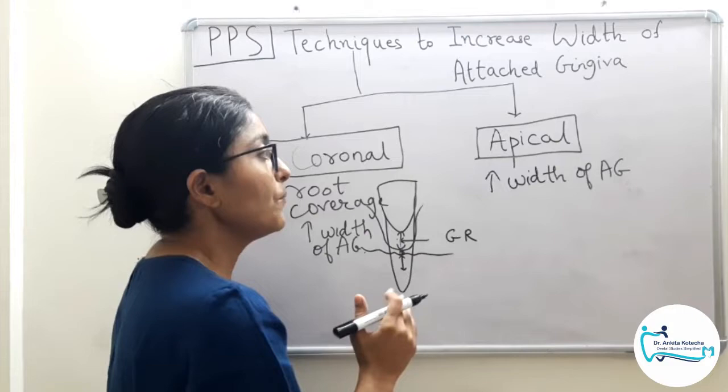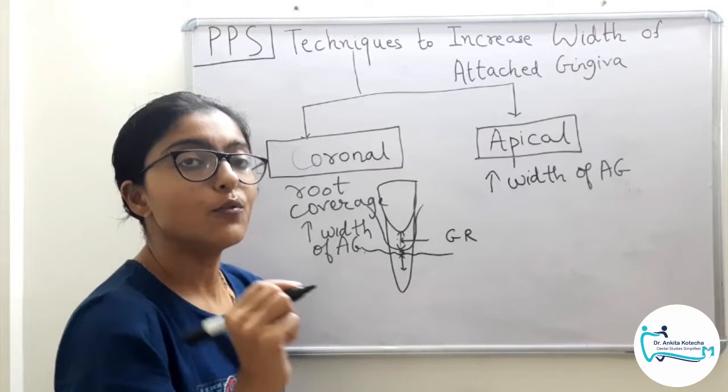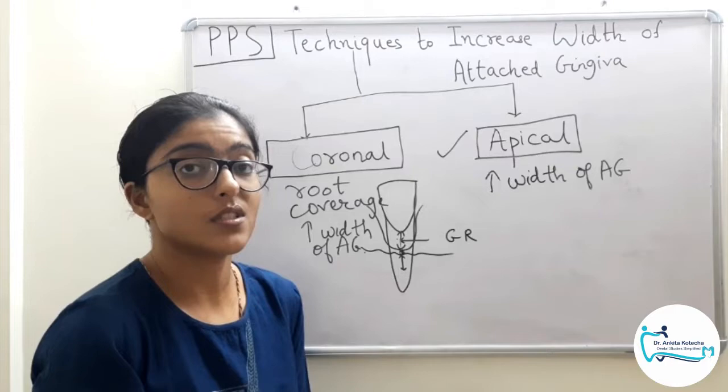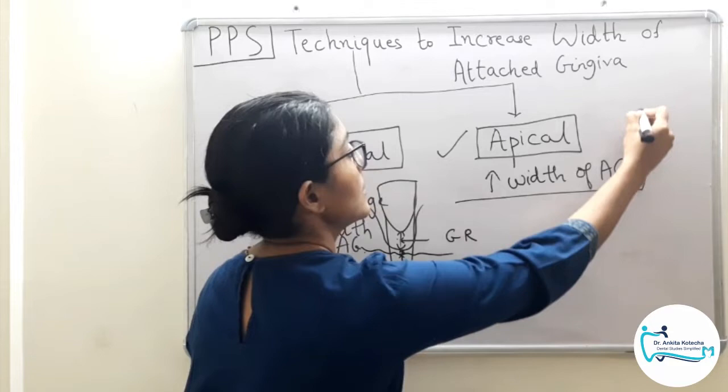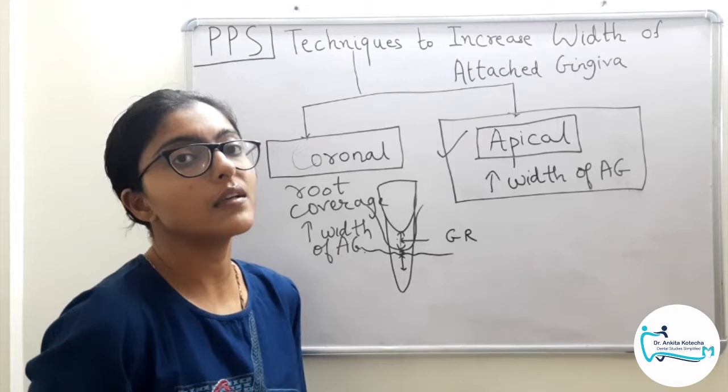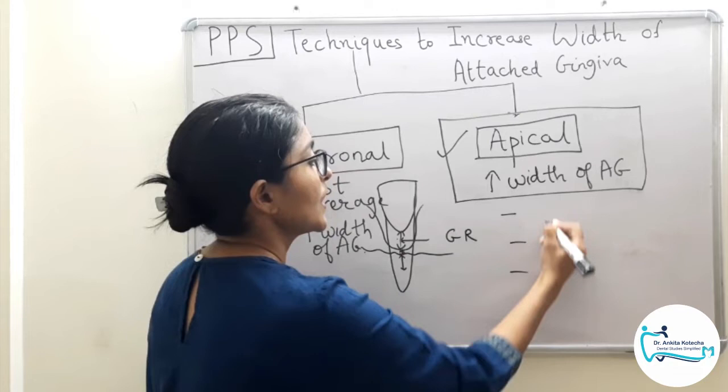Now we will discuss what those techniques are. For today's video we will discuss the techniques to increase the width of attached gingiva apical to the recession. The main topic is gingival augmentation — apical to the gingival recession — and in this we have mainly the free gingival graft.